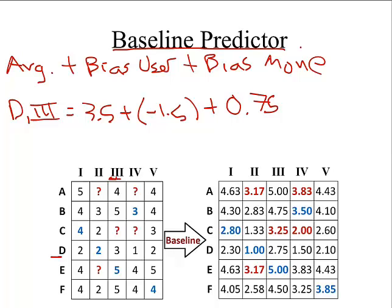And so if we add those together, we get 2.75 as the new predicted rating for user D in movie 3.